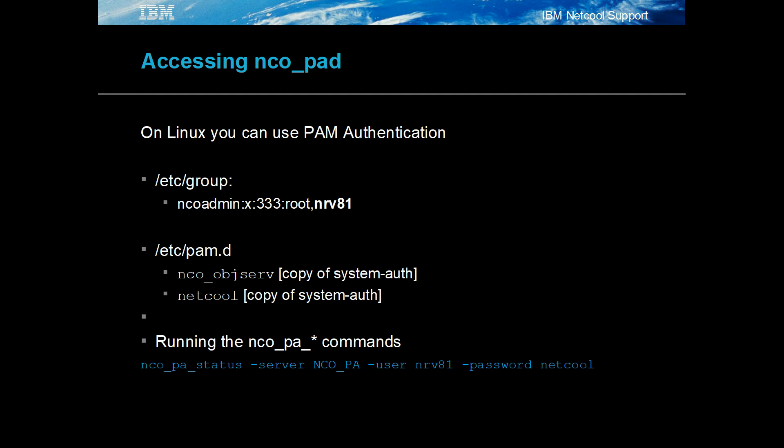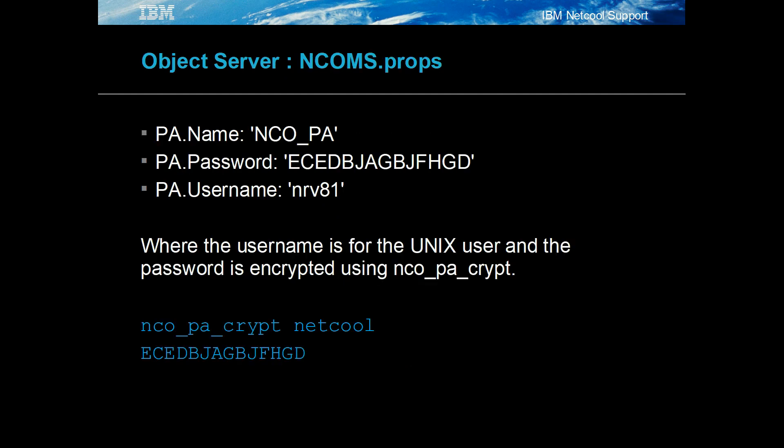In order to authenticate the user, PAM needs to access the system files. Creating PAM files with the filenames netcall and nco_obj_serv allows processes to authenticate via the PAM modules. The object server property file needs to have the nco_pad user defined to allow external actions to work. The user's Unix password needs to be encrypted using nco_pa_crypt.